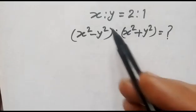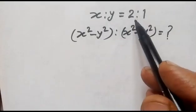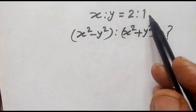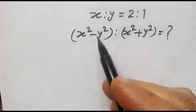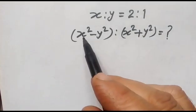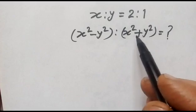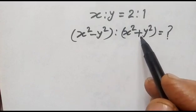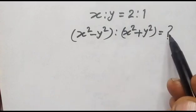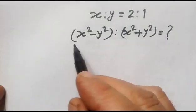We have given x is to y is equal to 2 is to 1. We have to find out the ratio between x squared minus y squared is to x squared plus y squared.